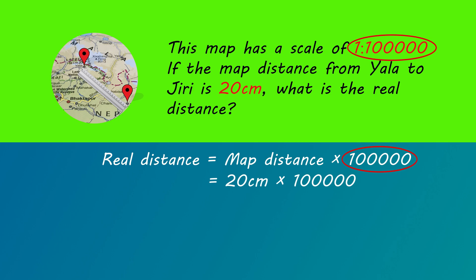So 20 centimeters measured with the ruler is multiplied by the scale of 100,000. That's two million centimeters. It's not sensible to say that the real distance between towns is in centimeters, so we will change this to meters by dividing by 100 to get 20,000 meters. Then we change that to kilometers by dividing by 1,000 to get 20 kilometers. The real distance between Yala and Jiri is 20 kilometers.